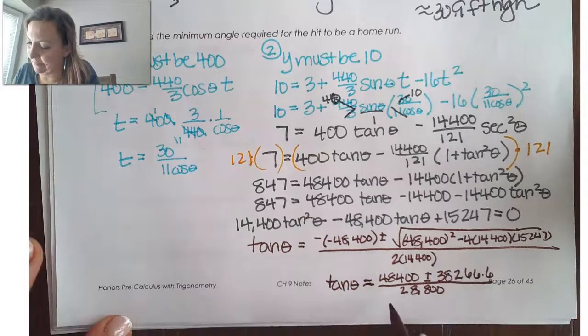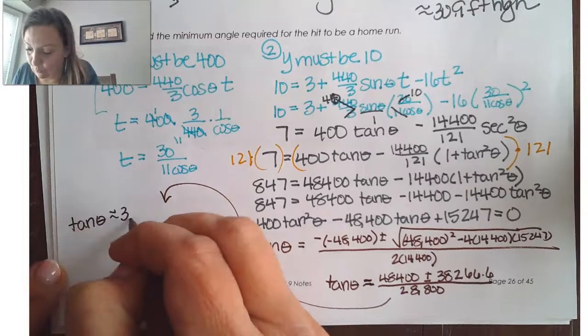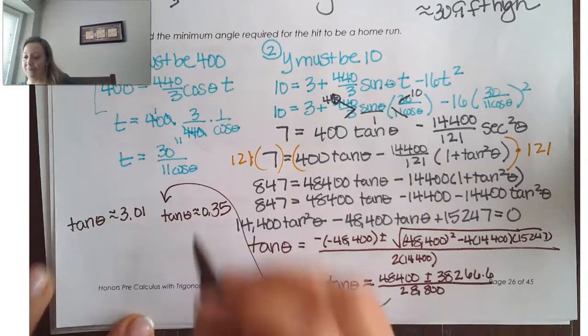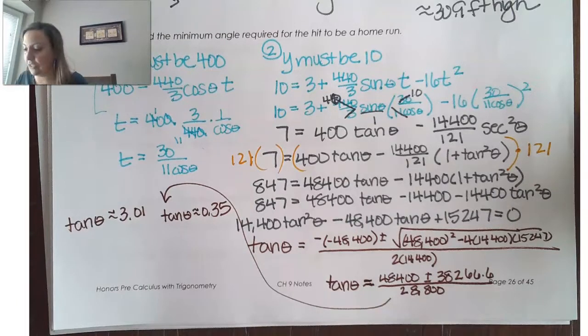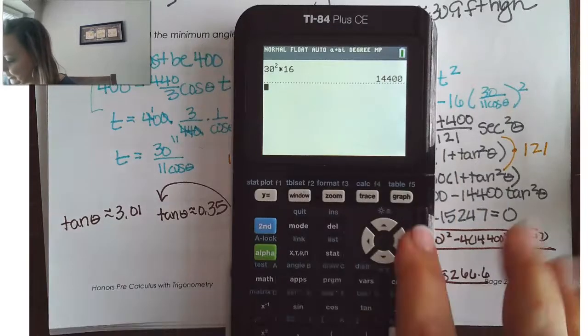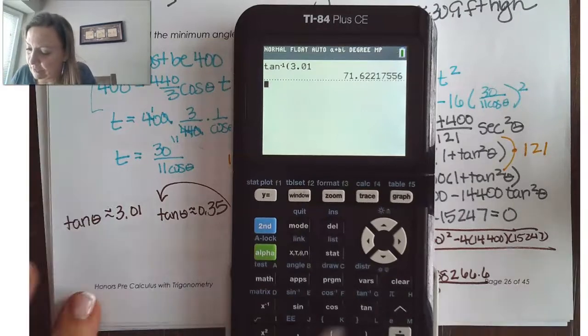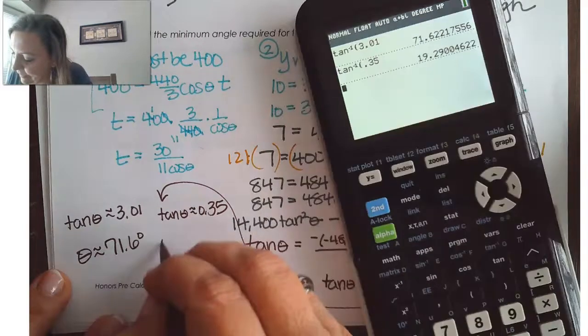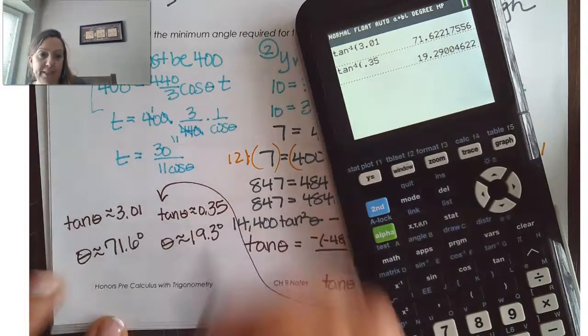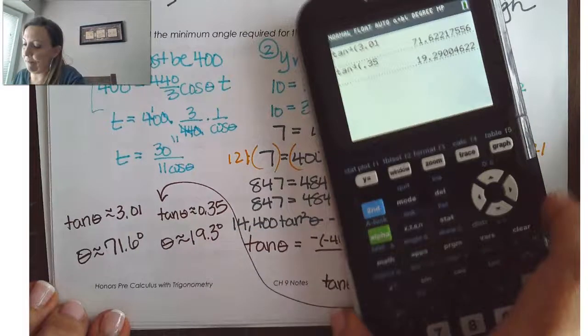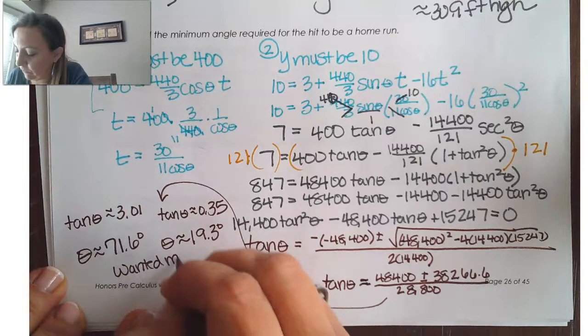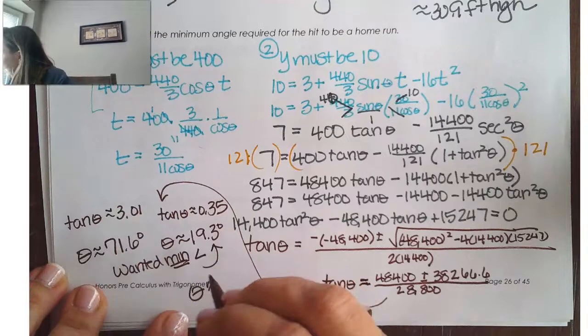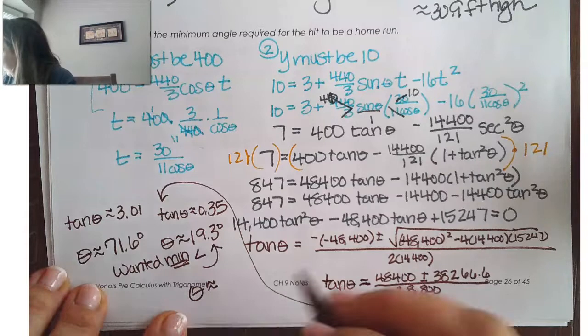So, then, if I find each of these, my tangent of theta can be about 3.01 if I add. And if I subtract, tangent of theta could be about 0.35. So, what we could do is use inverse tangent to find that. So, I can take the inverse tangent of 3.01. And that tells me that theta is going to be about 71.6 degrees. I could take the inverse tangent of 0.35. That means that theta could be about 19.3 degrees. But, what they wanted is they wanted the minimum angle. So, either of those could work. And so, that means that we would want to choose this one. So, we would say that theta is going to be about 19.3 degrees.